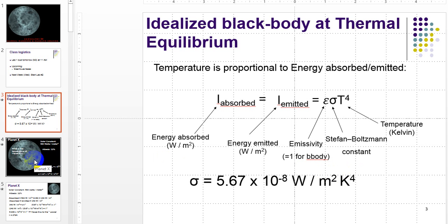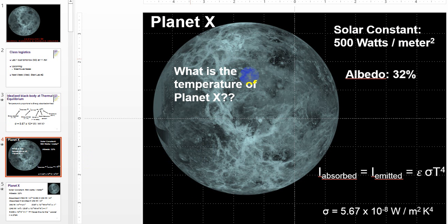Oftentimes I give you examples like this. So this is some planet, planet X, and the question is, what is the temperature of planet X? I give you information about the solar constant and the albedo, 32%, which means that of the incoming solar radiation, the 100% that's coming in, 32% actually gets reflected up.